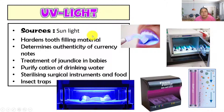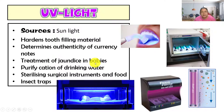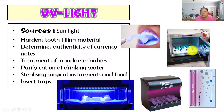Next is UV light, which is normally purple or violet in color. Applications include hardening of filling material, detecting the authenticity of currency notes to check if they are fake, treatment of jaundice in babies, purification of drinking water using UV light to remove contaminants, sterilizing surgical instruments for doctors, and insect traps — the purple color traps flies.